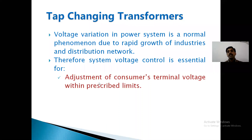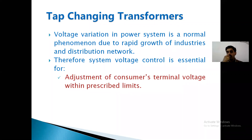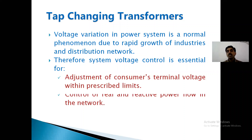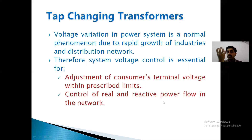Voltage control is needed for adjustment of the consumer signal voltage within prescribed limits — we have to adjust the voltage within plus or minus 5% variation; it should not vary above or below that. Next, the control of real and reactive power flow in the network. If you want to control reactive power especially, voltage must vary — more absorption of reactive power means more voltage to be supplied; less absorption means voltage should be reduced.